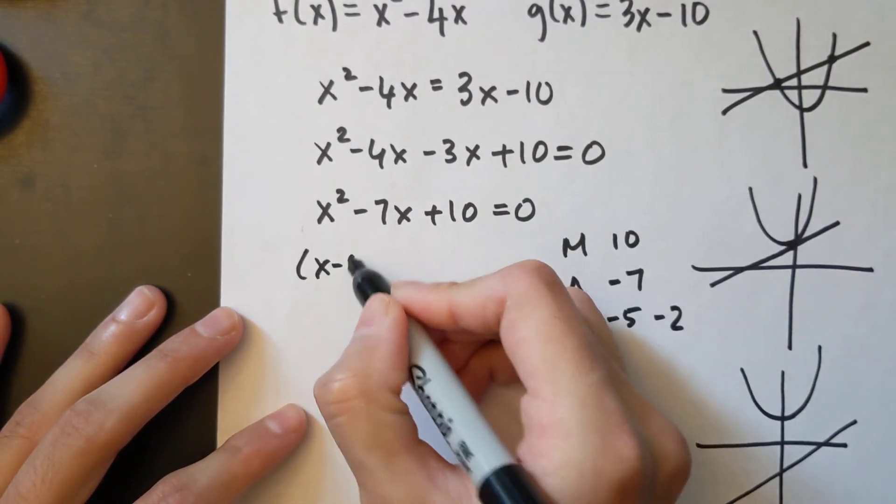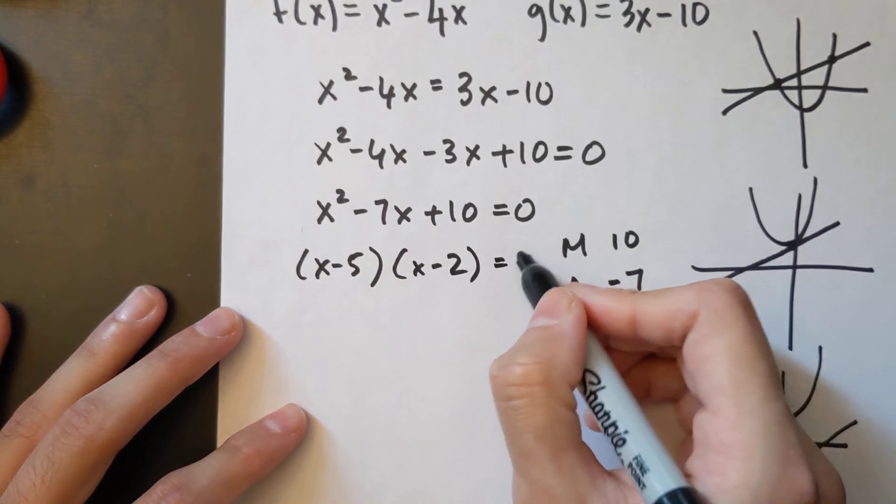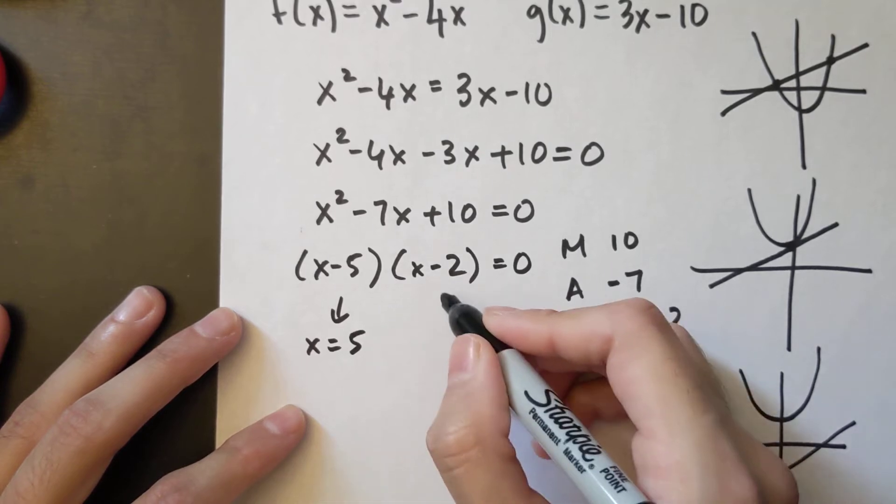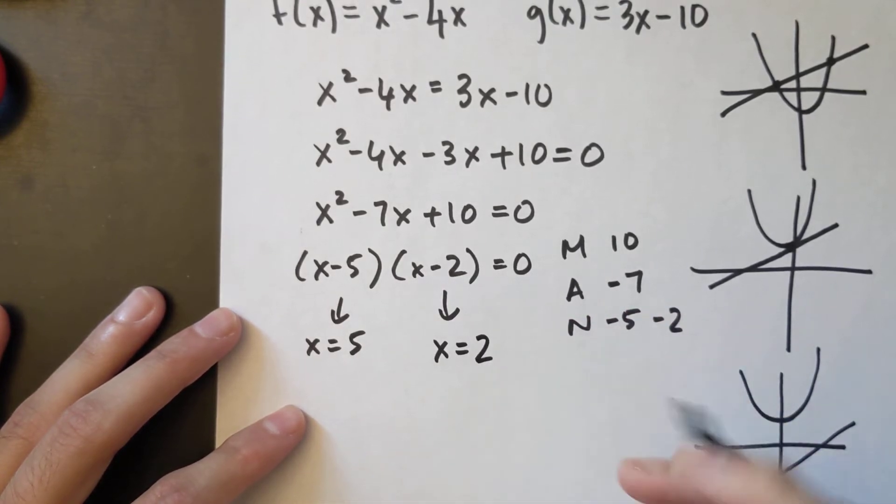So I have x minus 5, x minus 2 equals 0, x equals 5 and x equals 2.